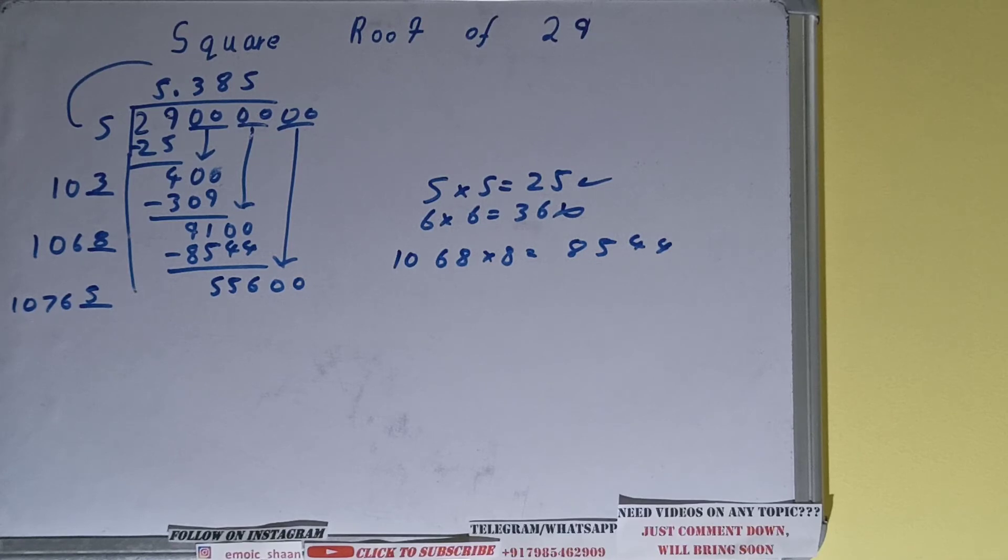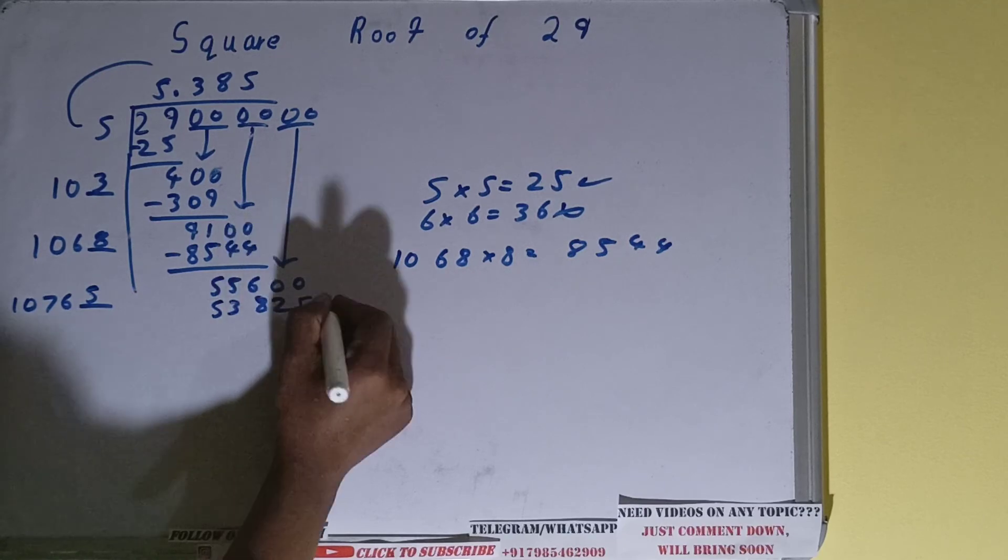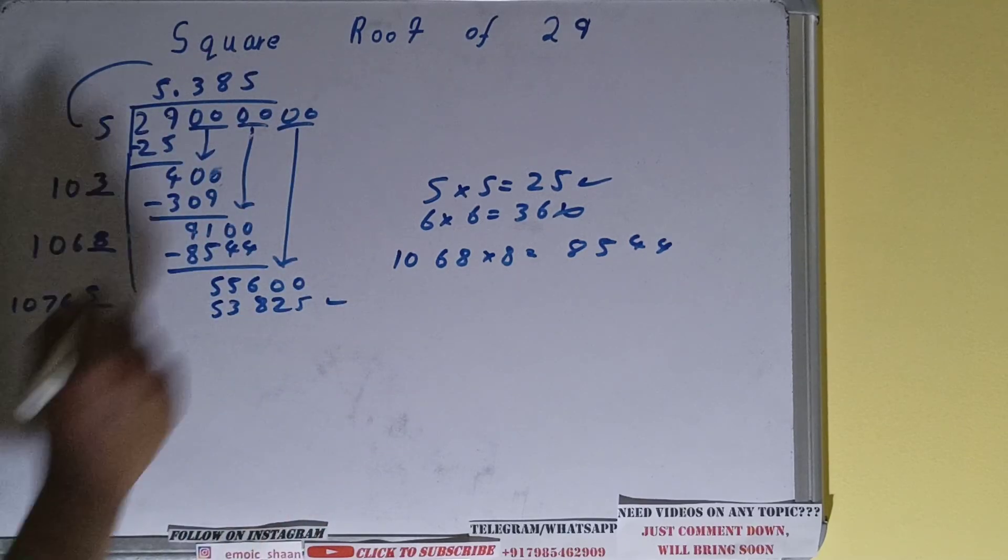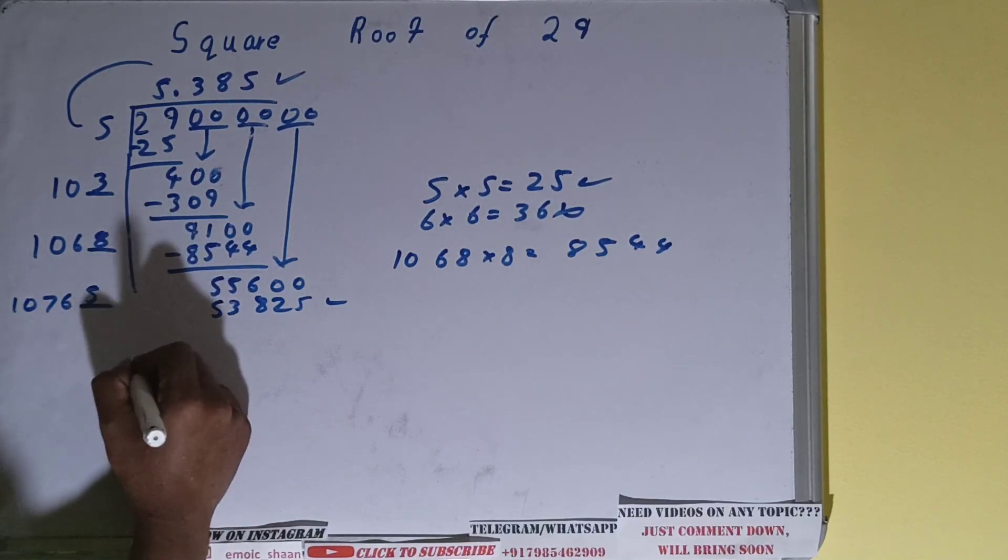So 10765 times 5 is 53825, which is okay to take. But we don't need to calculate further because we already got to three decimal places, which is the standard for finding out square root. So our answer will be: square root of 29 is 5.385.